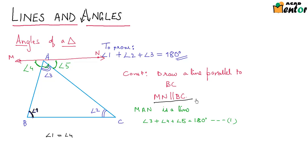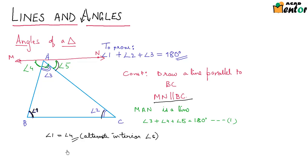Because MN is parallel to BC, and angles 1 and 4 are nothing but alternate interior angles. We know that alternate interior angles formed when two lines are parallel are always equal. So angle 1 equals angle 4. Similarly, angle 2 equals angle 5, because they are also a pair of alternate interior angles formed when AC is the transversal to lines BC and MN. So angle 4 is angle 1 and angle 5 is angle 2.